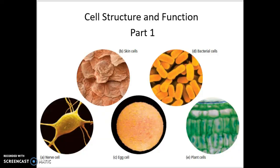Welcome to the lecture on cell structure and function. Previously, we were talking about what is life, how do we know it's alive, the features of life, the basic characteristics. Keep in mind, the cell is a basic functional unit of life — that's the smallest living organism. Mitochondria and Golgi bodies and all these things are parts of the cell, but they're not considered living. It's all those little structures that work together to create a cell that makes the cell function and the cell considered alive.